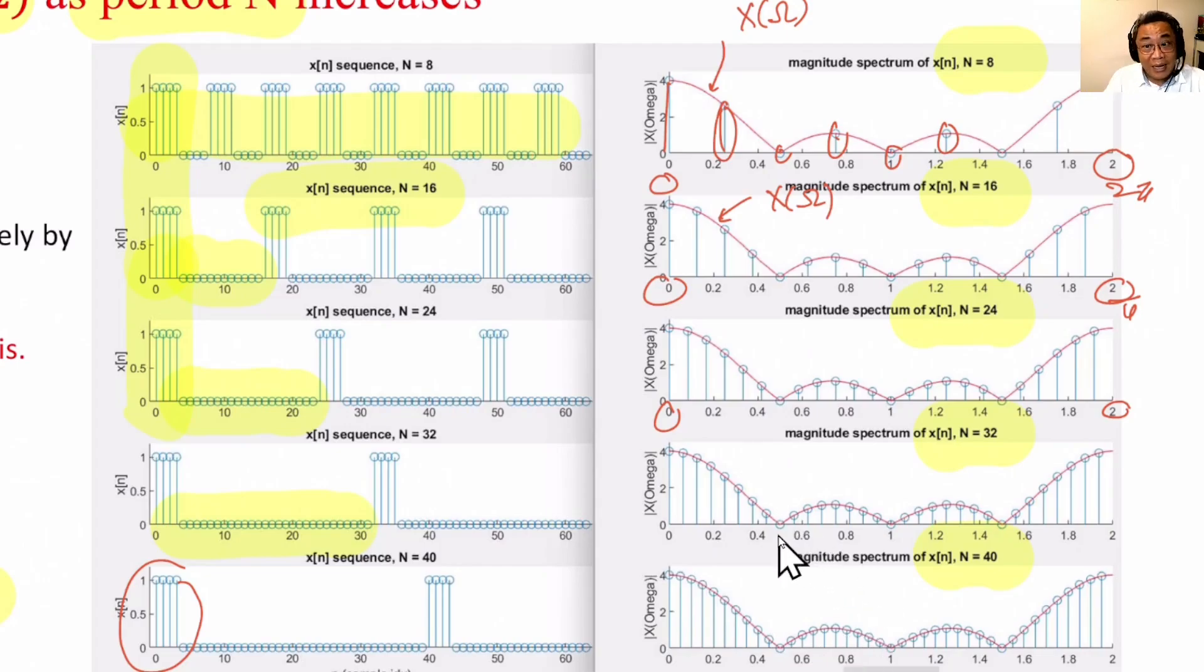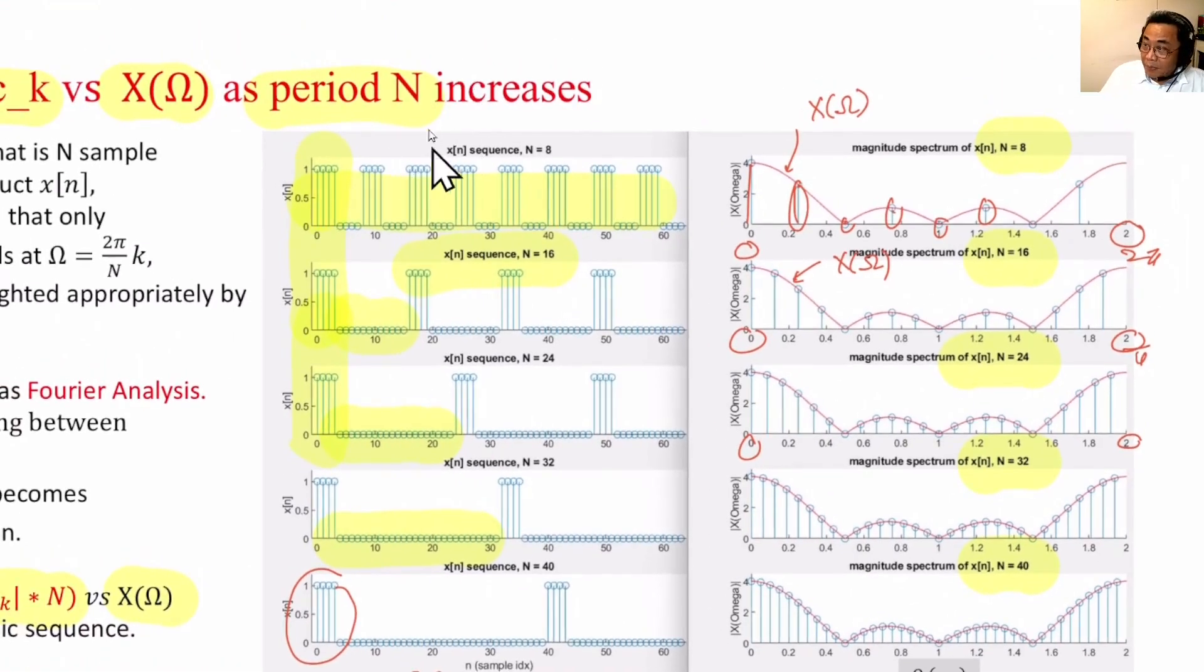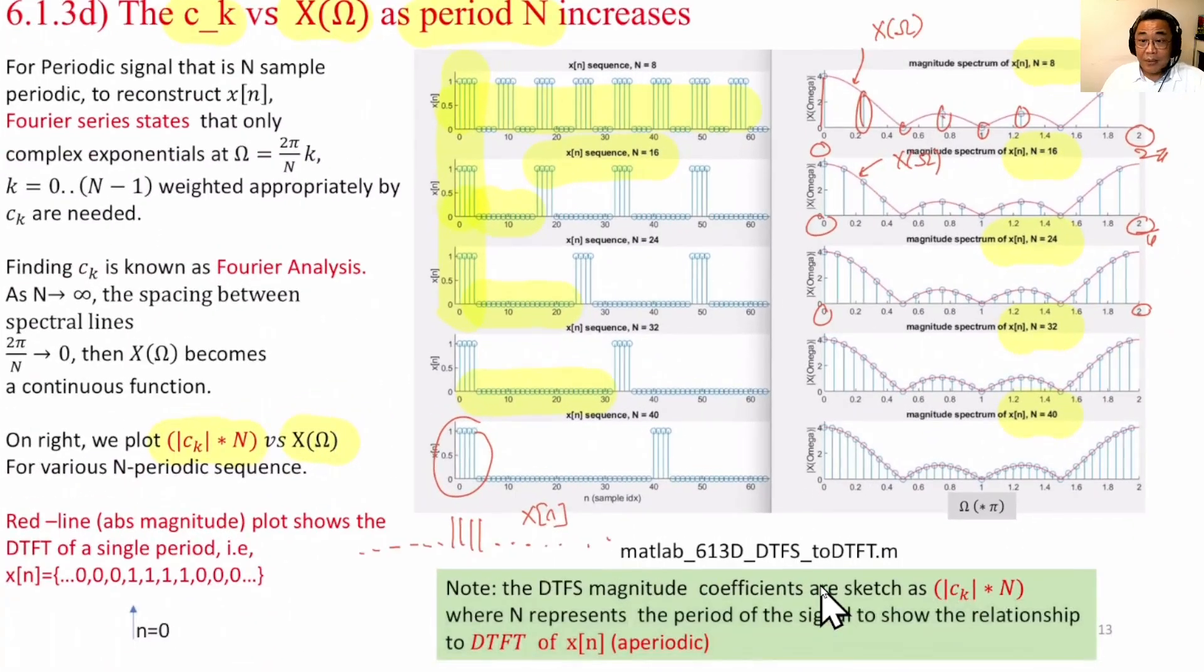Remember here, we are plotting N times Ck. So this example clearly shows that in a periodic sequence, as N increases, then it will become the discrete time Fourier transform of the aperiodic sequence. Of course, it must be N times Ck for the relationship. We'll examine this further in the future.